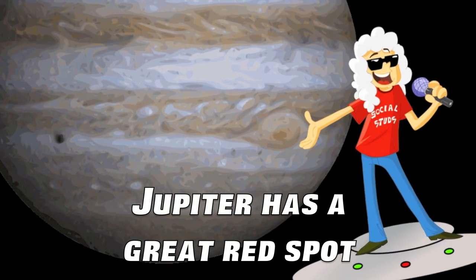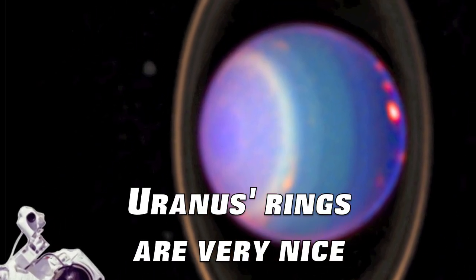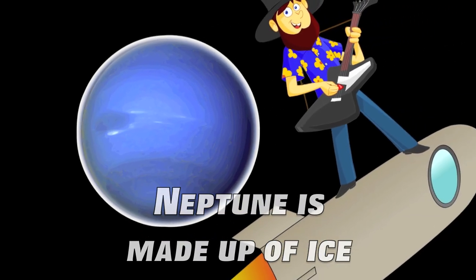Jupiter has a great red spot. Big rings are what Saturn's got. Uranus's rings are very nice. Neptune is made up of ice.